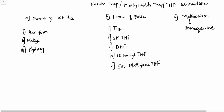After understanding the forms of vitamin B12 and folic acid, for our topic of discussion — the folate trap — only two are important: one is the methyl form (methyl B12), and the others are tetrahydrofolate and 5-methyltetrahydrofolate.